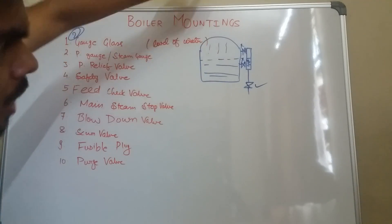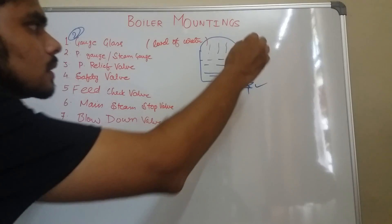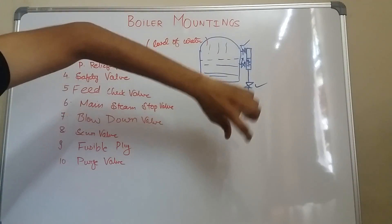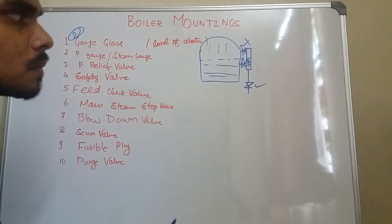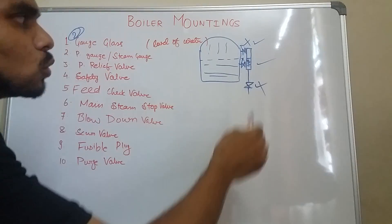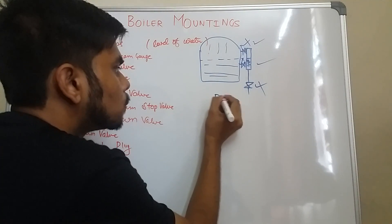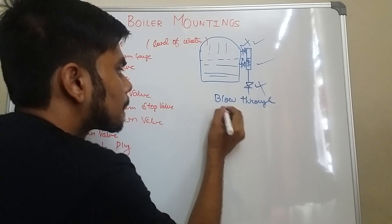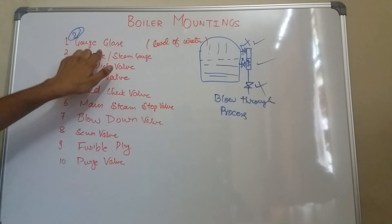So what we will do is close both valves and open the drain valve so that all the steam and water present inside the gauge glass will flush out. Then we open the steam valve so that high pressure steam will come out and take out all the sediments. Then we close this and open both valves again so that it will show the correct readings. This process is known as the blow-through process.